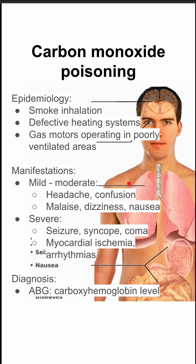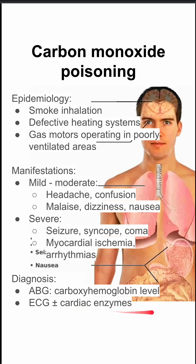The diagnosis is typically made with an ABG. You can use the carboxyhemoglobin level from the ABG. You can also notice changes on the EKG, and you might have changes in cardiac enzymes as well in the case of myocardial ischemia.